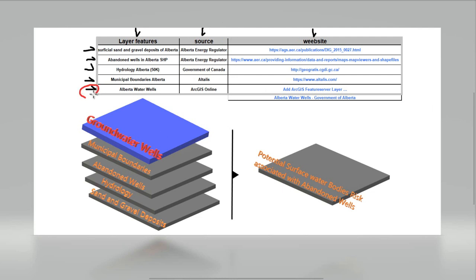For the Alberta water wells layer, I couldn't find any website where we can download the shapefile for the groundwater wells in Alberta. I decided to use RGIS online because here we can use the RGIS feature server layers to add information to our GIS desktop. However, you can check the information through the Alberta Water Wells Government of Alberta website to look for any other kind of information related with this layer.